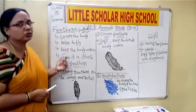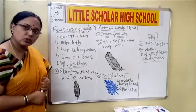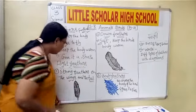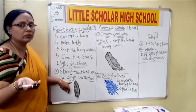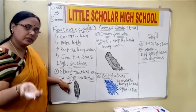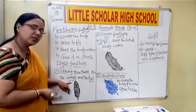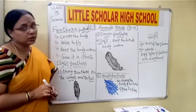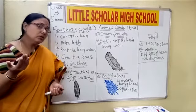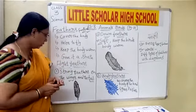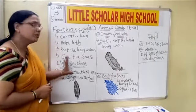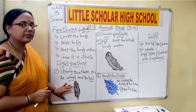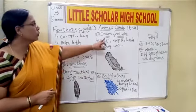The flight feathers help the birds to fly and hence they are strong in nature. Their position is in the wings and in the tail region. The wings are the main things that help birds fly, so flight feathers are present there. They are also present in the tail region because the tail helps in changing the direction of the bird. This is how a flight feather looks.